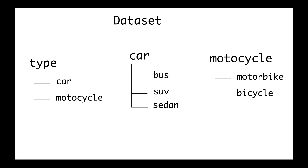Assume you want to create a hierarchical classifier. Some people may think to create the dataset by collecting images for three distinct datasets: one to differentiate between car and motorcycle, one to differentiate the different types of cars (bus, SUV, and sedan), and another to differentiate between motorbike and bicycle. Each dataset would then be trained separately. But this approach is not very efficient because it leads to creating three different datasets, whereas it is possible to create one reusable dataset that can be used for either hierarchical or flat classifiers depending on how you load the data and assign labels.